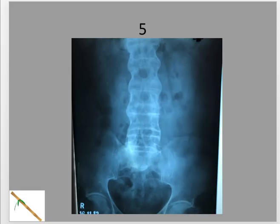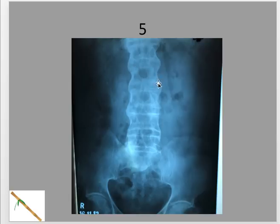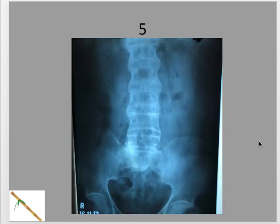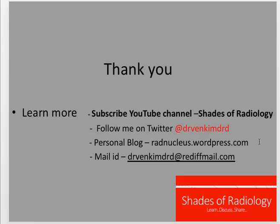Coming to the next case: this is a classic spotter you might have seen during your MBBS and clinical postings. You can see a very smooth undulating pattern on either side of the vertebrae — these are nothing but smooth osteophytes called syndesmophytes. There is a difference between osteophytes due to degenerative disease and syndesmophytes. Syndesmophytes are very thin, smooth, and continuous, giving an appearance of bamboo. This is a classic case of ankylosing spondylitis. In the next video, we will be discussing a few more classic cases. Thank you.